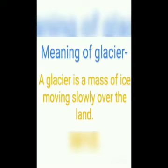Now the question arises: what is a glacier? A glacier is a mass of ice moving slowly over land, or we can say that a glacier is a slow-moving river of ice. Gangotri and Yamunotri glaciers originate from the Himadri.